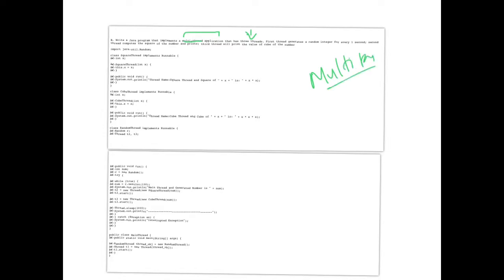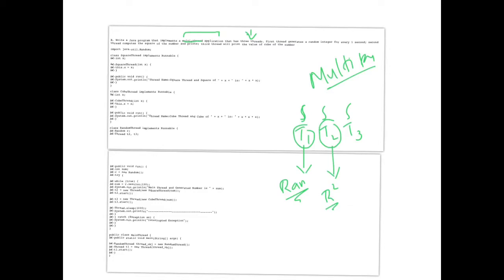What this program does is — you are supposed to create three threads: thread T1, thread T2, and thread T3. The first thread creates a random number. Thread 2 will calculate the square of that random number, and thread 3 is supposed to calculate the cube of that random number.